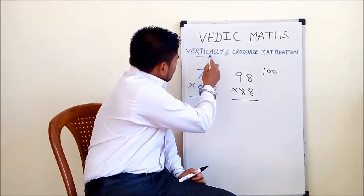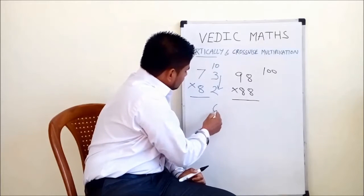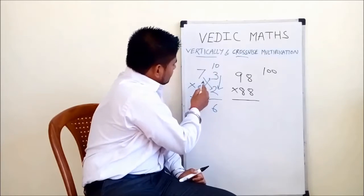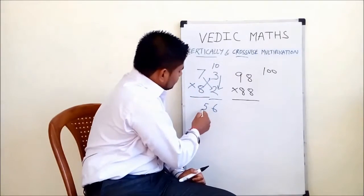So as the technique mentioned, vertically we multiply 3 into 2 which is 6, and crosswise we subtract - either we subtract 7 minus 2 or 8 minus 3. The answer is 5, so 56.